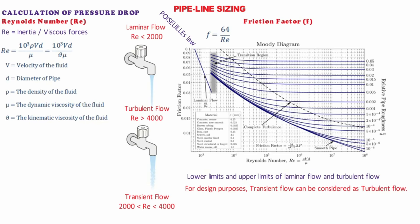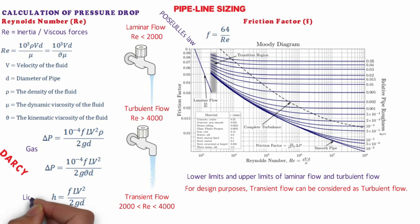Now let's see how these factors are used in calculating pressure drop in straight pipes. The pressure drop in straight pipes is calculated using Darcy's formula: ΔP = 10⁻⁴ × F × L × V² × ρ / (2 × g × D) = 10⁻⁴ × F × L × V² / (2 × g × ν × D). These equations are used for gas flows where pressure drop is expressed in kg/cm². For liquid flows, pressure drop is expressed in the form of head: H = F × L × V² / (2 × g × D).